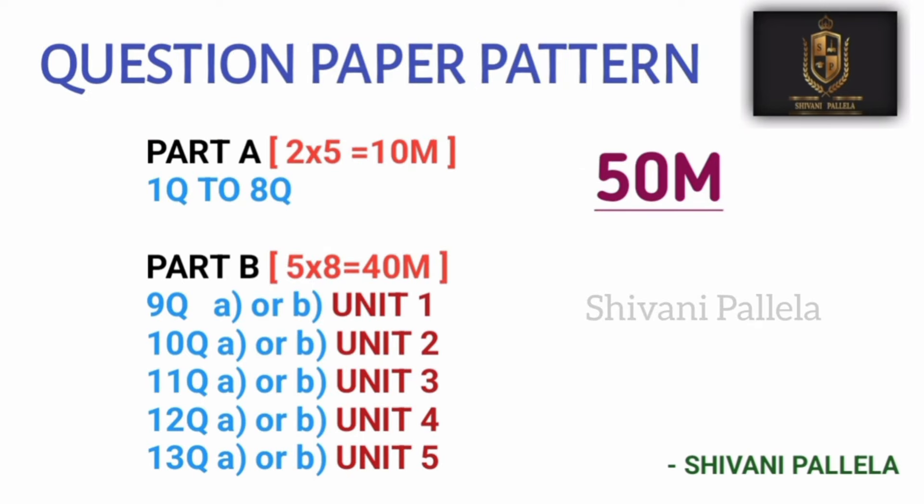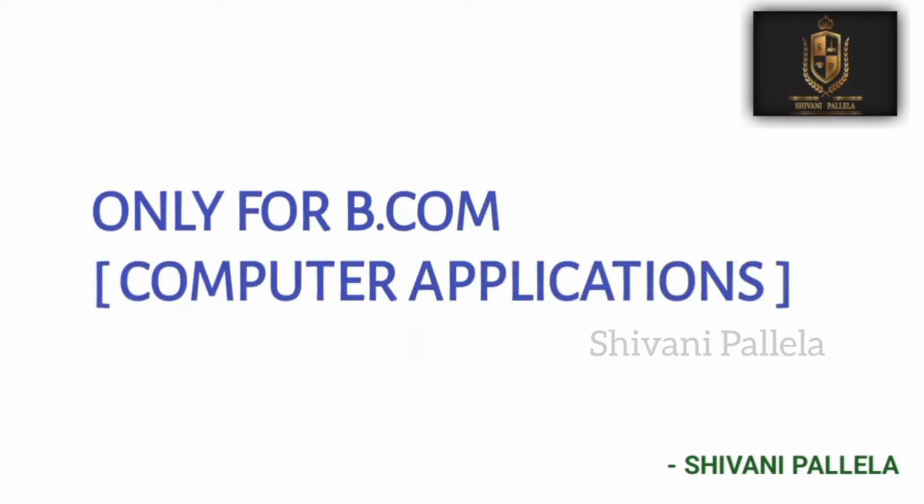In Part A, you need to attempt five questions — each carries two marks, so five into two is ten marks. For two marks, you need to write a minimum of seven to eight lines. For Part B, each question has internal choice and each carries eight marks. For eight marks, a minimum of one page or two sides of answers is important.